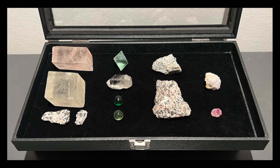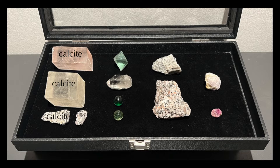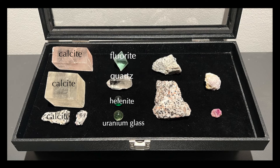We'll look at three different types of calcite from different sources, fluorite, quartz, helenite — which is a man-made material made from Mount St. Helens ash — and a uranium-doped glass marble.